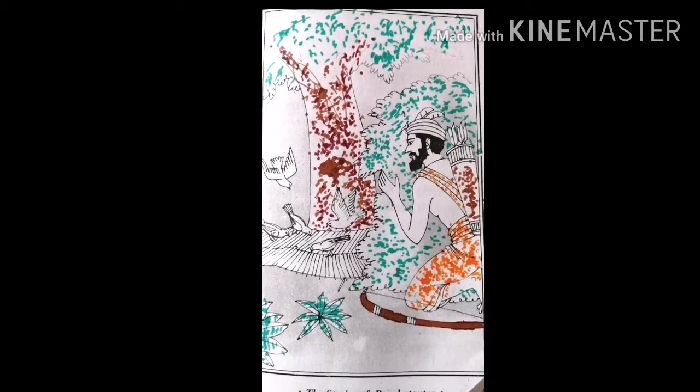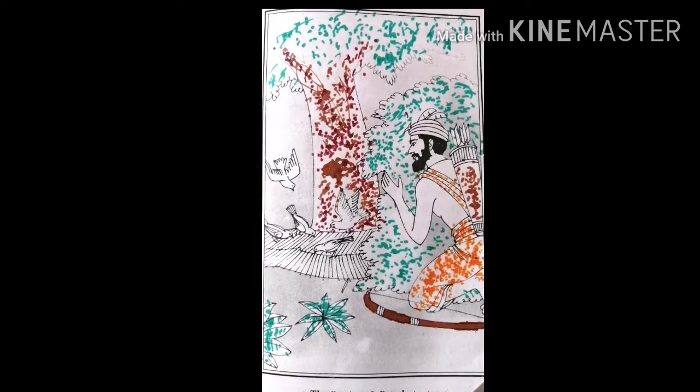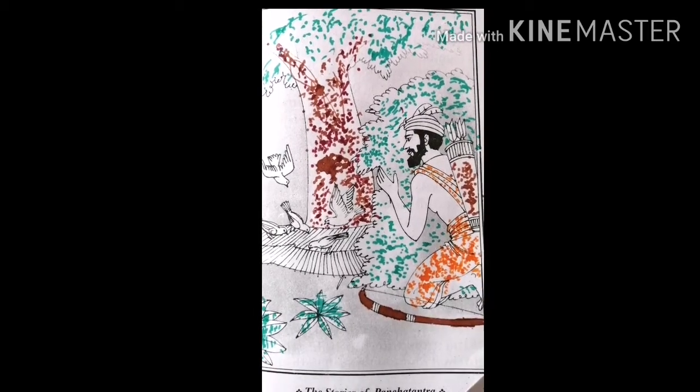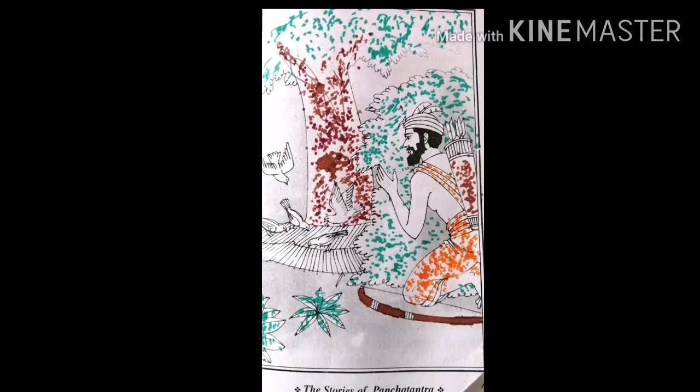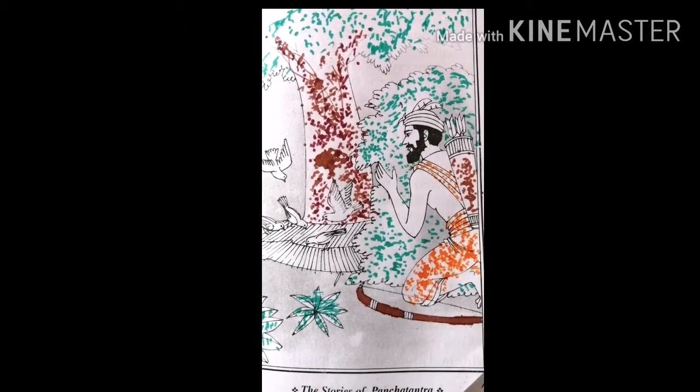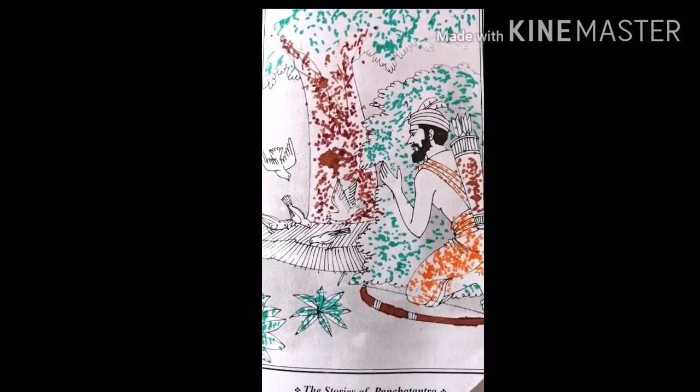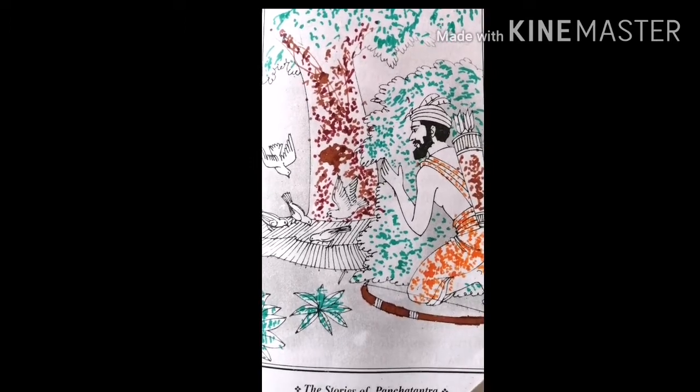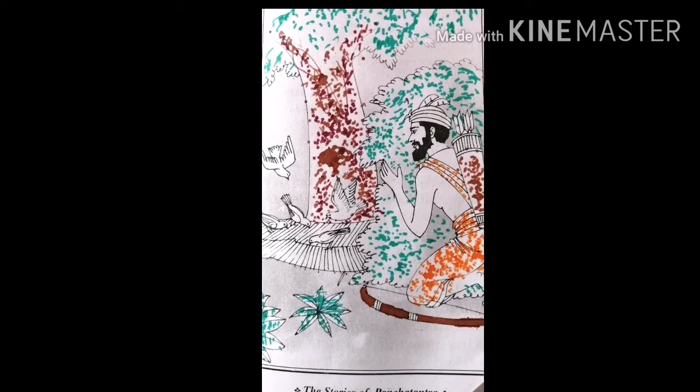We should all fly up together, clutching the net in our beaks. After escaping from this fowler, we should reach the banks of the river Gandaki to meet the rat Hiranyaka, who is my best friend. He will save us by nibbling at the net. All the doves felt glad on hearing the plan of Chitragreeva.